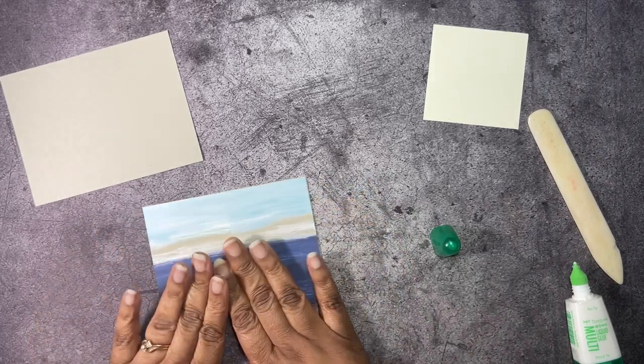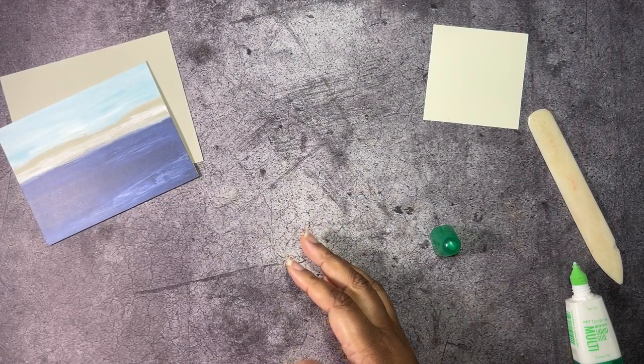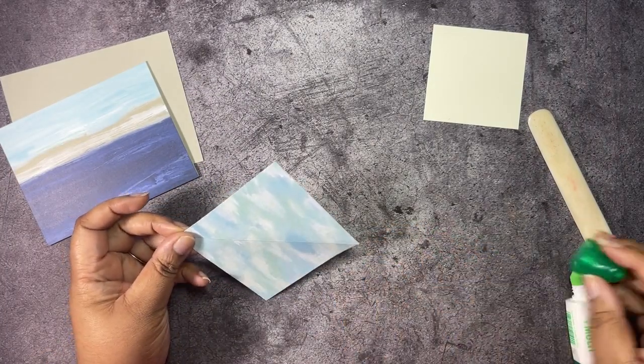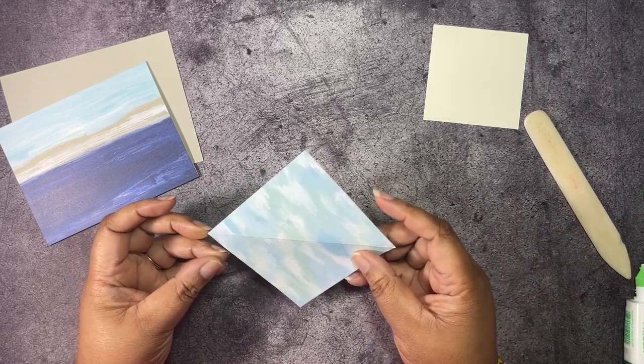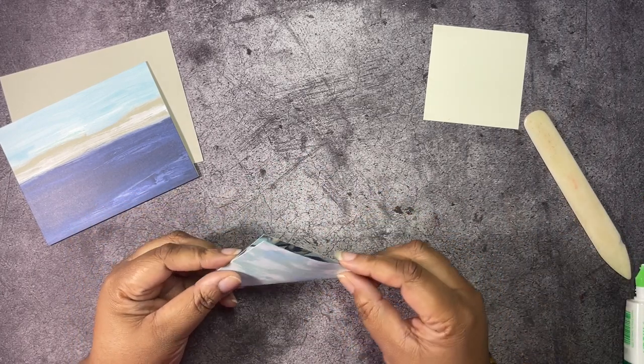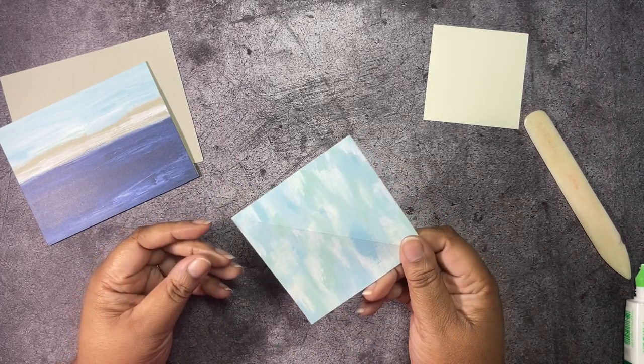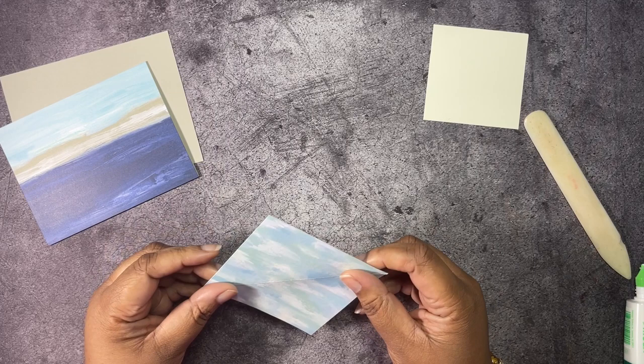Then we have a piece of designer series paper that is three and three quarters by three and three quarters and I have gone ahead and folded it at a diagonal. It doesn't matter which way you fold it. I guess it depends on what pattern your paper has.